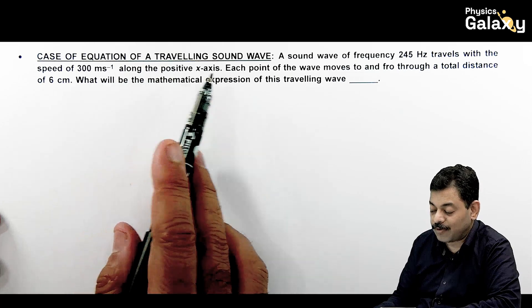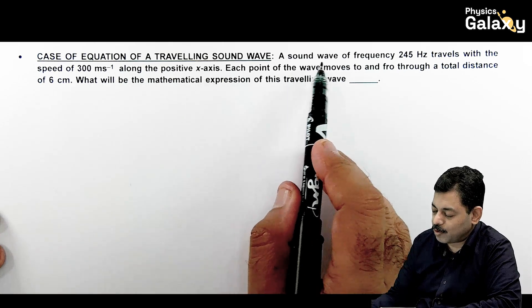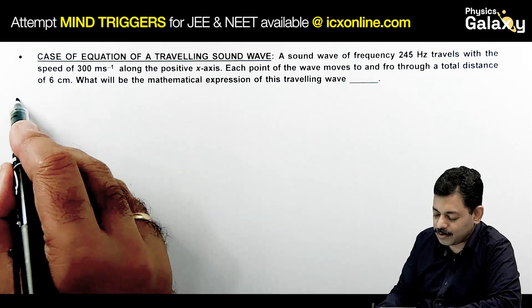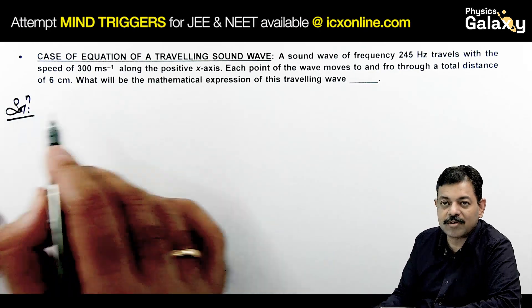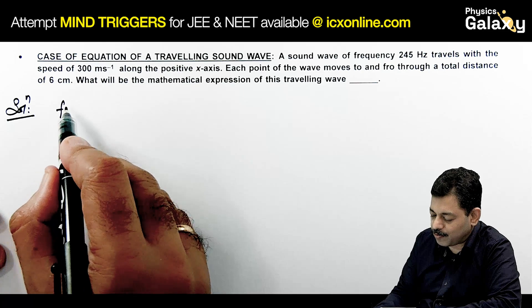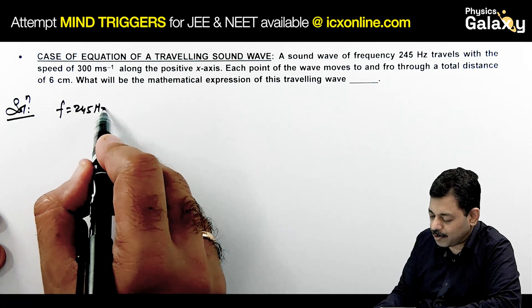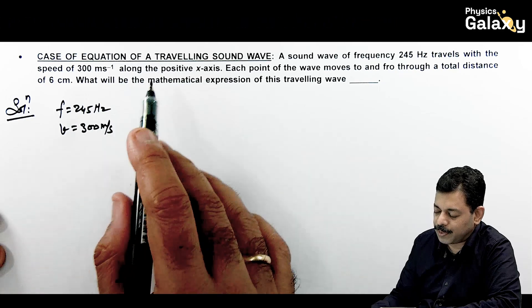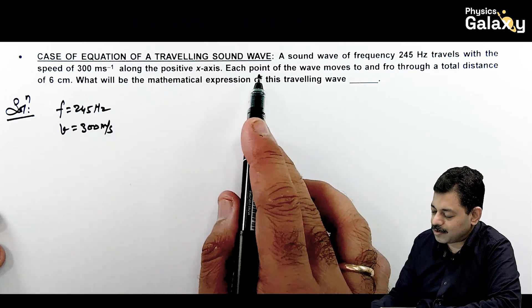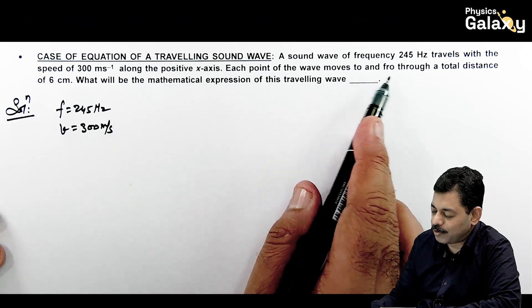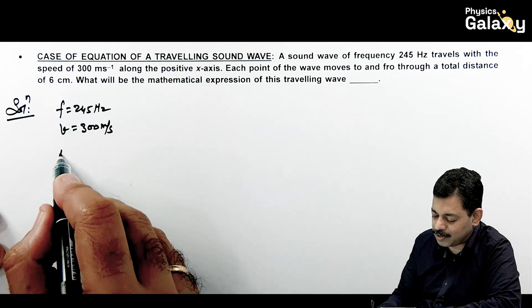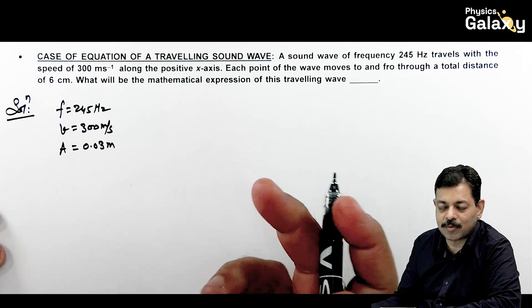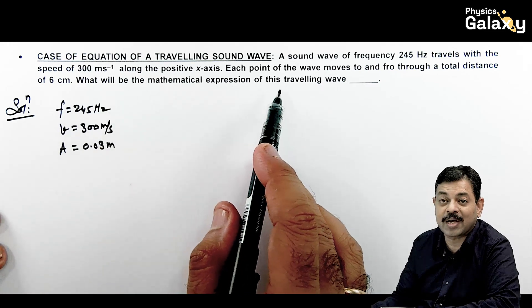The question says the sound wave of frequency 245 Hz travels with a speed of 300 meters per second. Whenever you get data, just try to compile the data here. Frequency is 245 Hz, wave speed is 300 m/s along the positive side of x-axis. Each point of the wave moves to and fro through a total distance of 6 cm, that means amplitude of oscillation is 0.03 meter in SI units. What will be the mathematical expression of traveling wave?